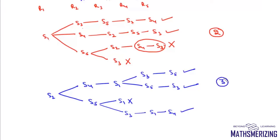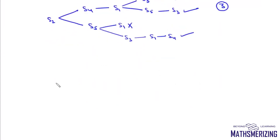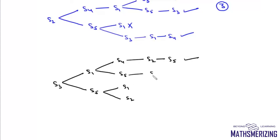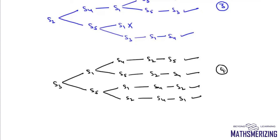Case 3: S3 sits at R1. The options for R2 are S1, S4, or S5. If S4 is placed, the next must be S2 followed by S5 — one valid case. If S5 is placed, it leads to S2 and S4 — another valid case. If S1 is placed, it leads to S4, S2, and S5 — another valid case. So for Case 3 there are four possible valid arrangements.